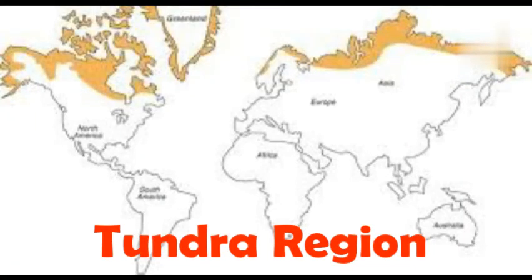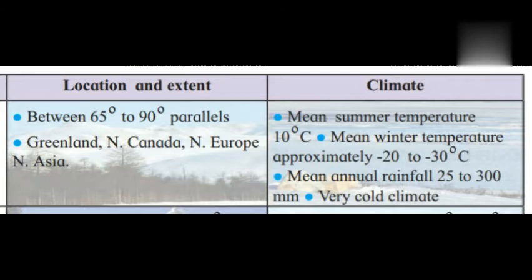Good afternoon students. Today we are going to continue our remaining lesson. The lesson name is Natural Regions. See in this region our table on page number 32. First is the Tundra Region. The tundra region is spread in the world between 65 degree to 90 degree parallels.